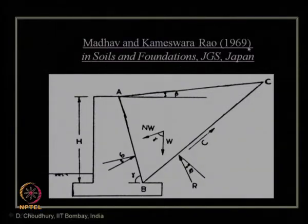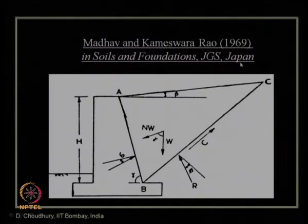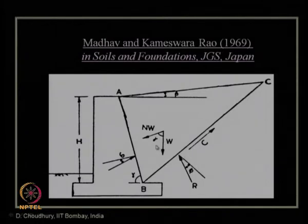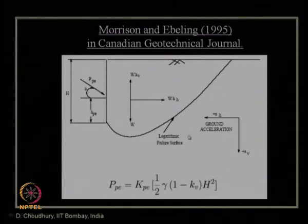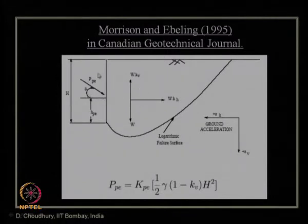Other researchers like Mathub and Kamesher Rao in 1969, published in Soils and Foundations by the Japanese Geotechnical Society, also estimated seismic active and passive earth pressure using pseudo-static approach, but for c-φ type soil (generalized soil), whereas Mononobe-Okabe was only for cohesionless soil. Morrison and Ebeling in 1995, in the Canadian Geotechnical Journal, proposed estimating passive earth pressure for a rigid retaining wall considering a curvilinear (specifically logarithmic) failure surface rather than a planar one, using limit equilibrium.